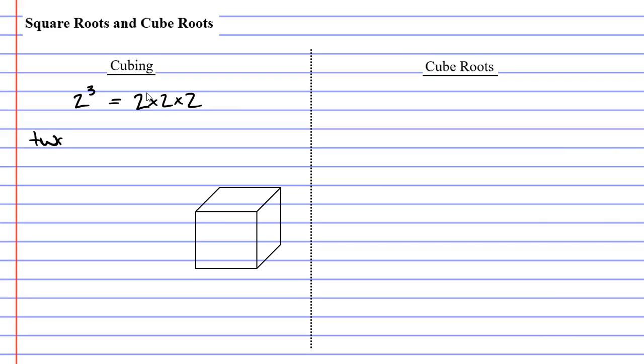And we say 2 to the power of 3. And we'll write down the other way we can say this. We can say 2 cubed. So why do we call it 2 cubed? Well, we're going to actually look at a cube below.